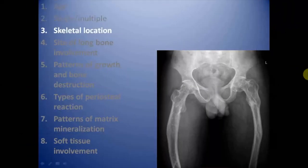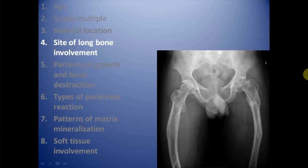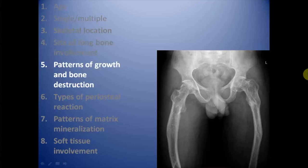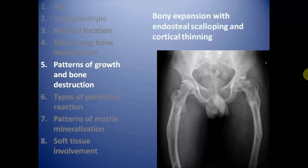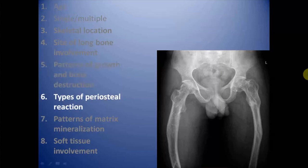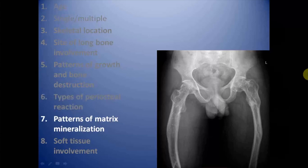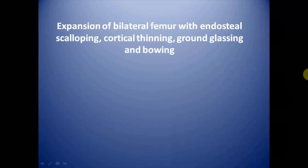The lesions are multiple. Skeletal location is the appendicular skeleton involving long bones. The site of long bone involvement is predominantly diaphyseal but also involving the metaphysis. Pattern of growth and bone destruction: these lesions are causing bone expansion with endosteal scalloping and cortical thinning of a non-aggressive type. There is no obvious matrix mineralization and no soft tissue involvement.